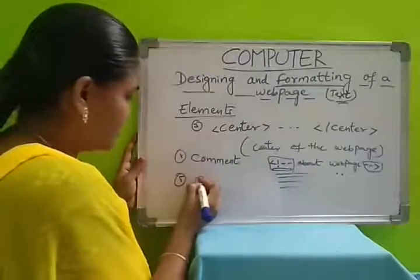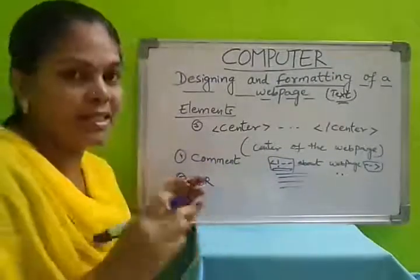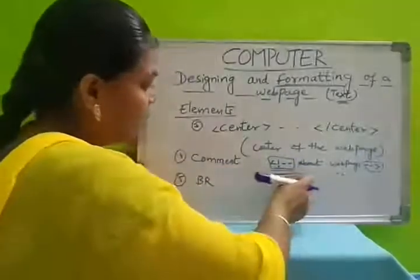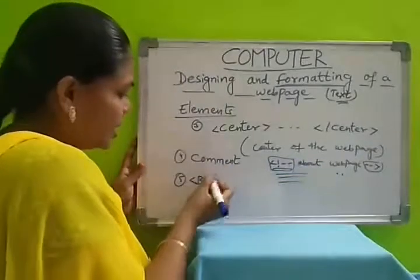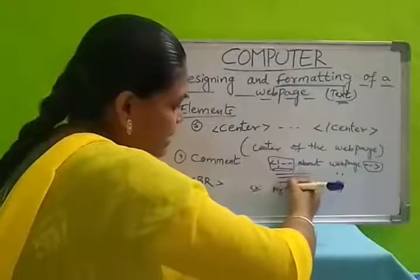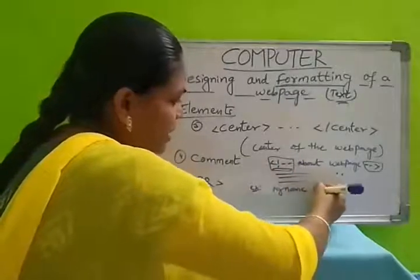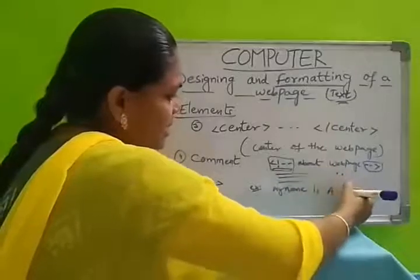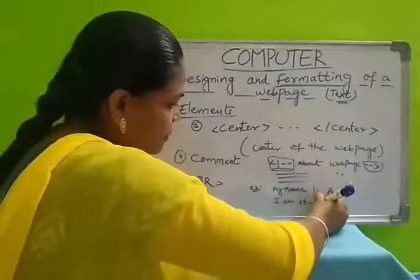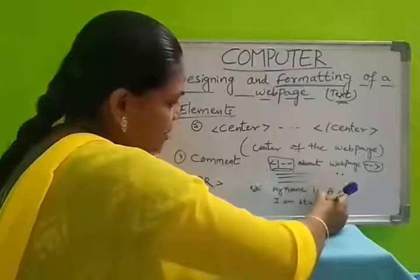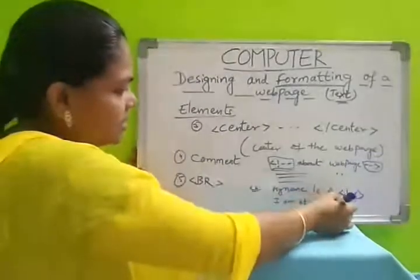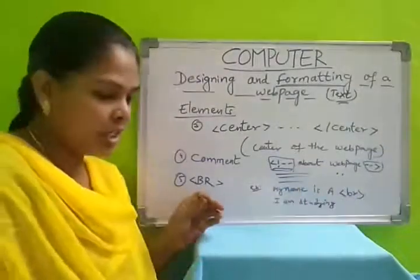So next one is break (BR). To give a break between lines — that means to display different text in different lines. For example, if you write 'My name is A' and 'I am studying in class 9' and you want these to display on separate lines, we use the BR tag here. This element doesn't have any off tag, only an open tag. It breaks the sentence so that the two sentences are displayed in different lines.